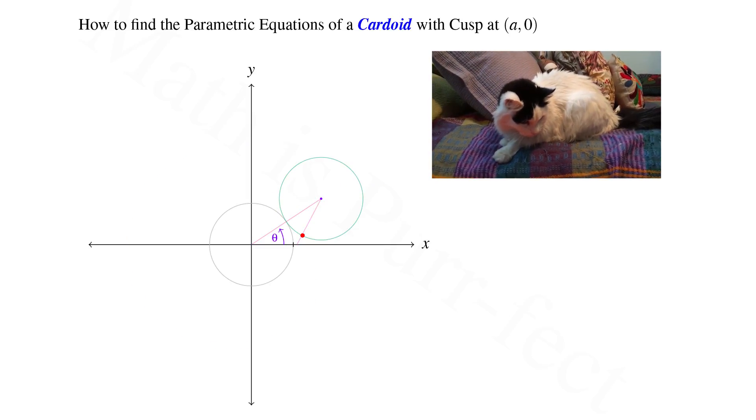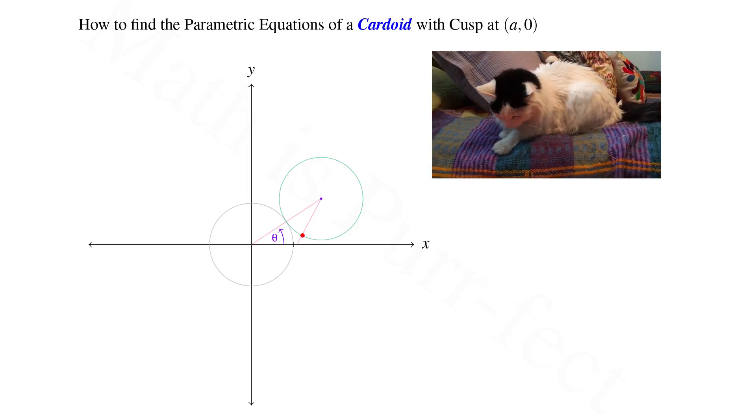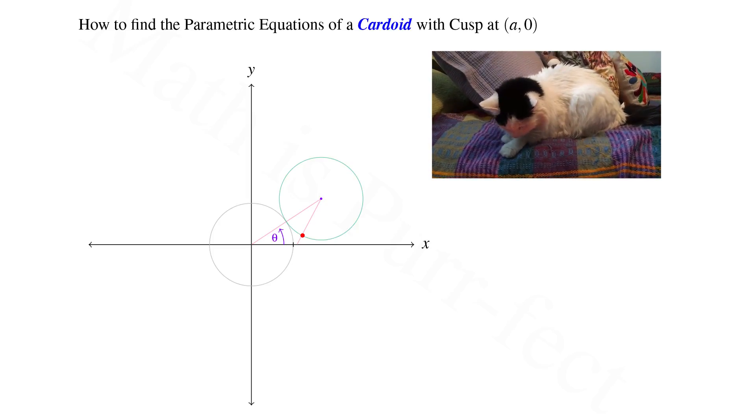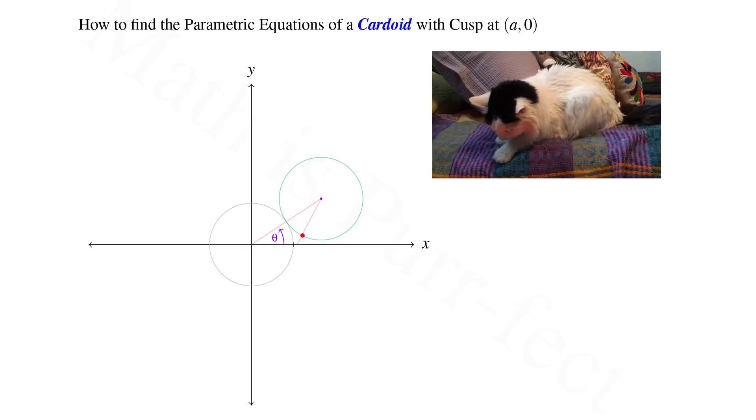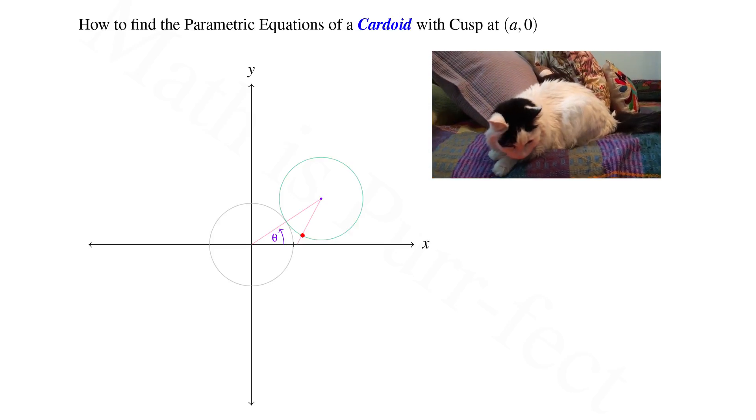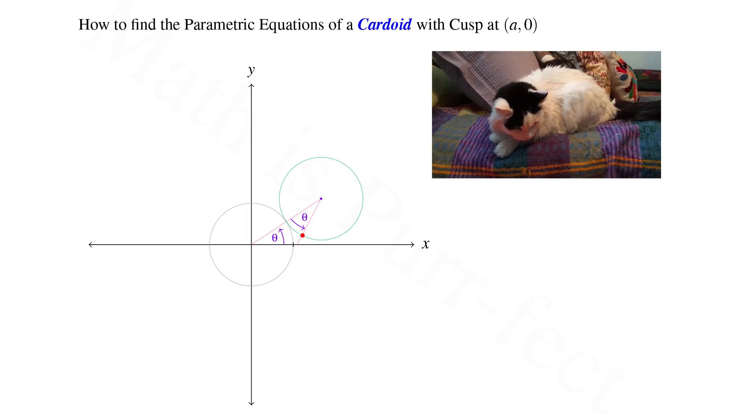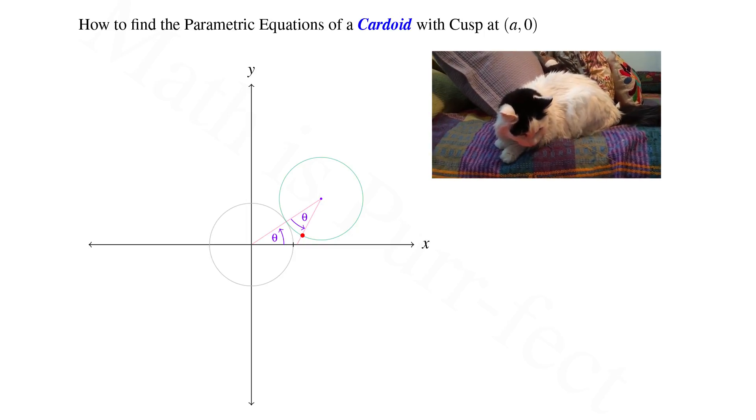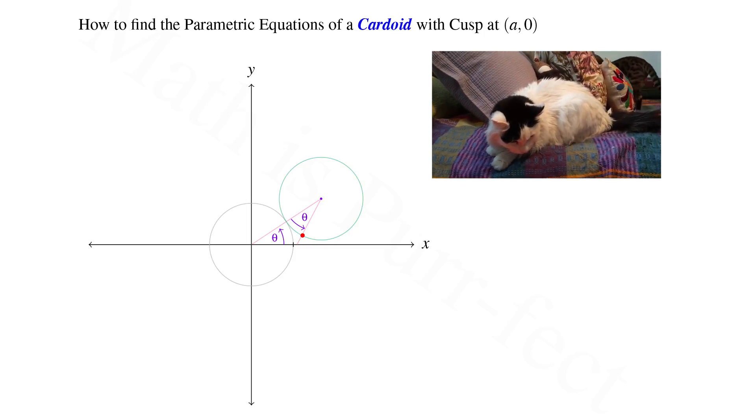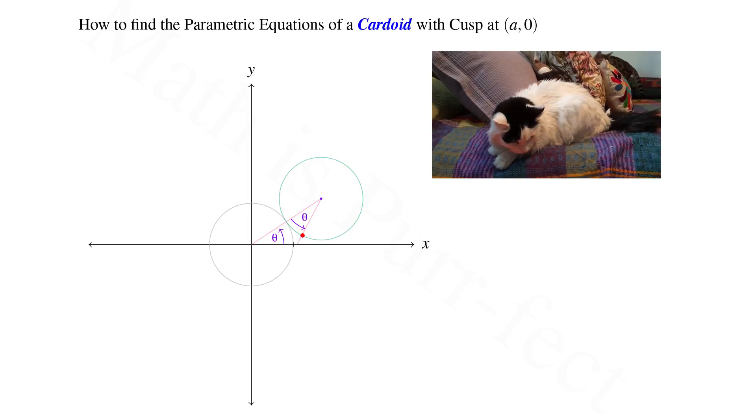To that end, let's consider the triangle which measures from the origin to the center of the exterior circle and then back to the x-axis through the point on the cardioid. We note that two of the interior angles on this triangle are theta. Hence, it is isosceles.